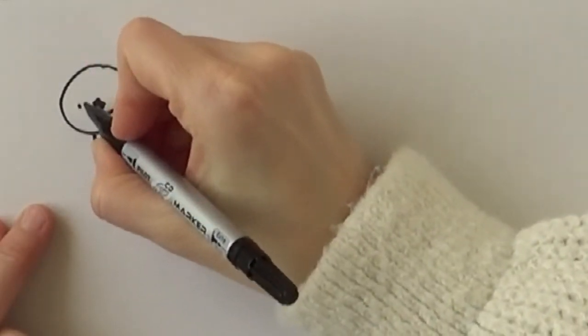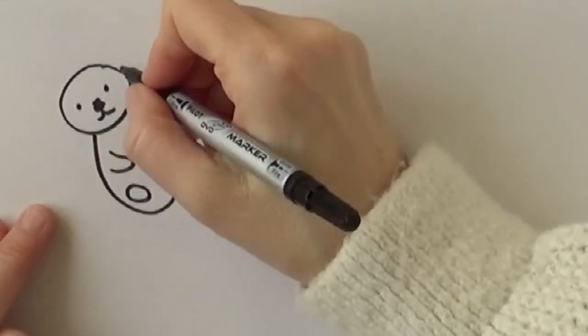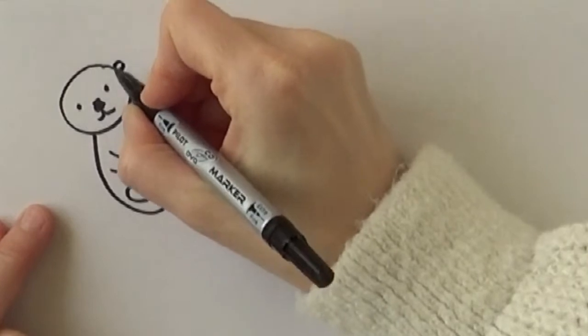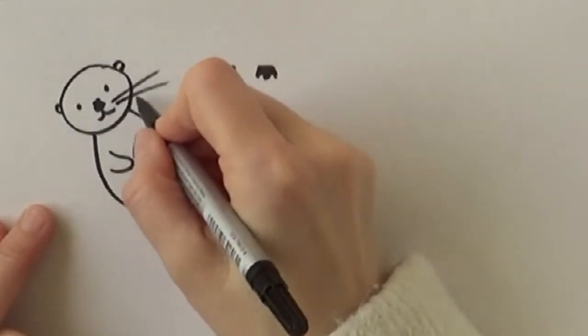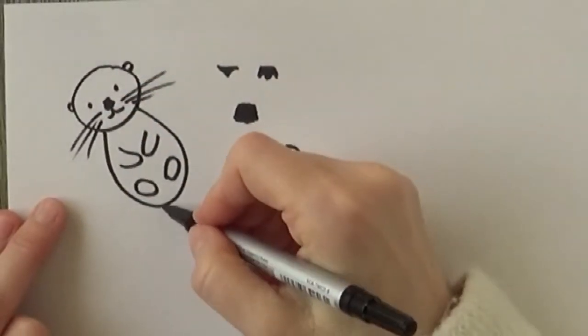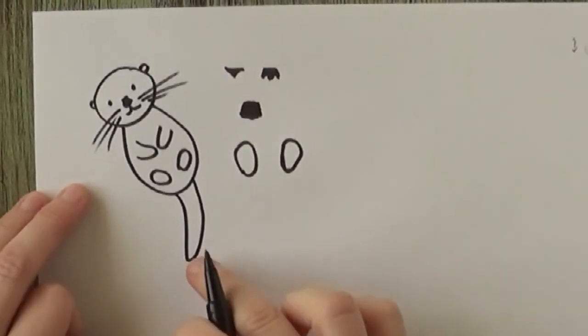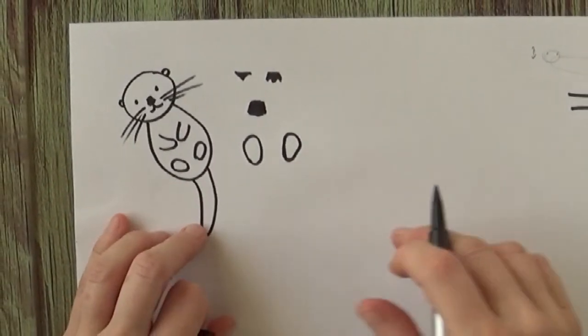And eyes a little bit more far apart, not too big because otters have small eyes and little round ears and of course whiskers. And you've got an otter. We add a tail because that's really important for otter and this is one of her characteristics.